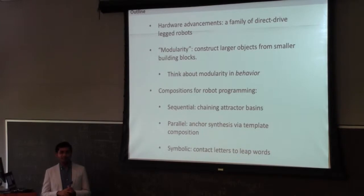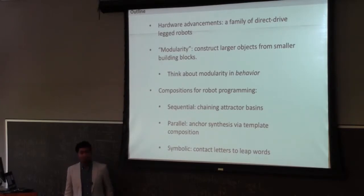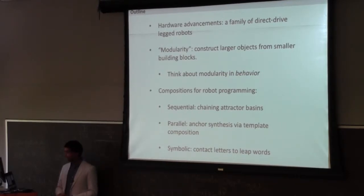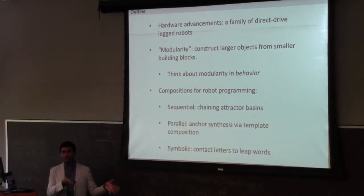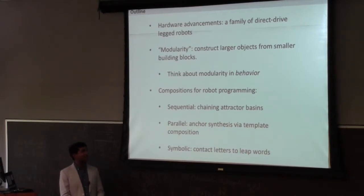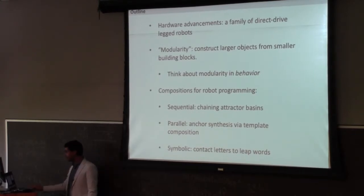One approach is modeling the entire system — 10 degrees of freedom, 20 dimensions — and coming up with a control strategy for the whole system. But I'm thinking about how you construct the control strategy out of simpler primitives. The three important notions are sequential, parallel, and what I'm calling symbolic. Sequential means chaining behaviors together; parallel means doing two things at the same time; and symbolic is a more abstracted version of the sequential idea.